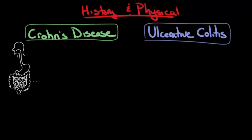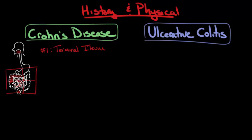In Crohn's disease, the lesions are discontinuous and they can occur anywhere from the mouth to the anus. However, the most common locations are the terminal ileum, the large intestine — also known as the colon — as well as other areas in the small intestine. If you imagine a box over the abdomen, the terminal ileum is largely located in the right lower quadrant of the individual.